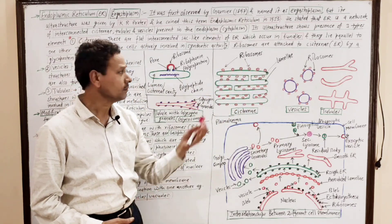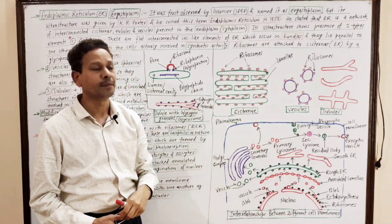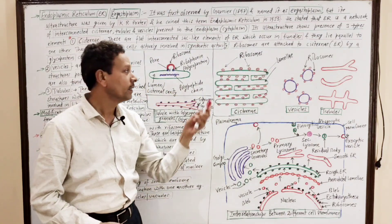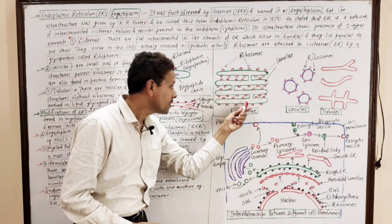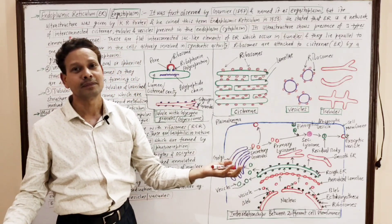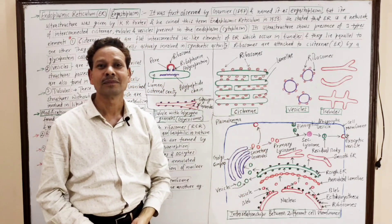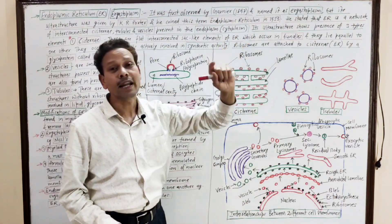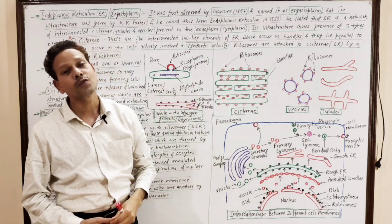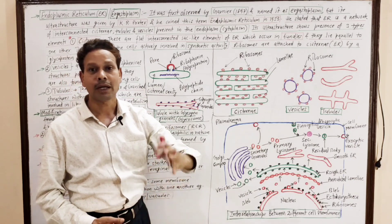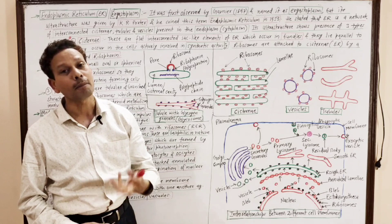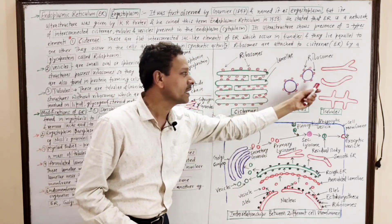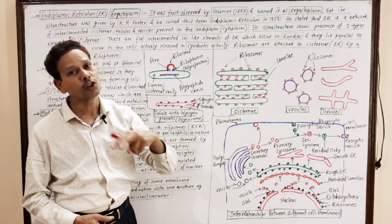Cisterna are flat, sac-like structures which are stacked, packed one above another, and run almost parallel to each other. These cisterna are interconnected with each other. This mass of cisterna is named ergastoplasm. That is why Garnier in 1897 coined this term ergastoplasm instead of endoplasmic reticulum. But the electron microscopic structure was given by K.R. Porter, who studied the interconnected network of cisterna, vesicles, and tubules, and named it endoplasmic reticulum.